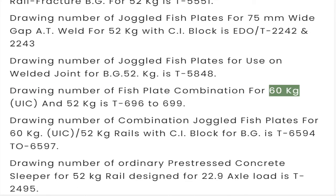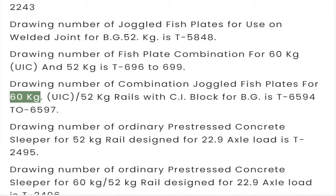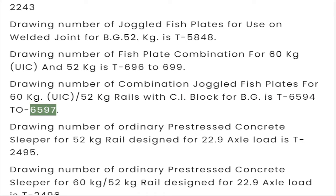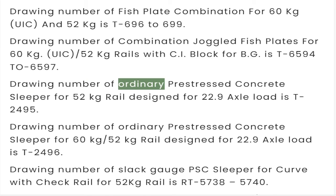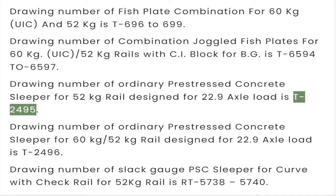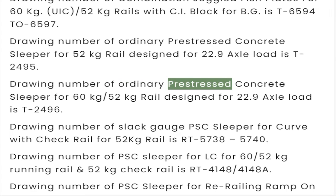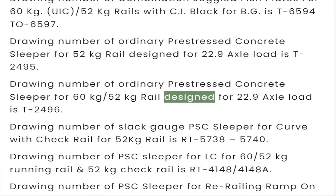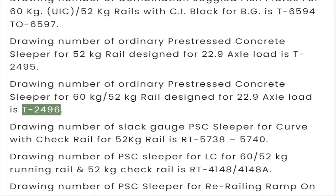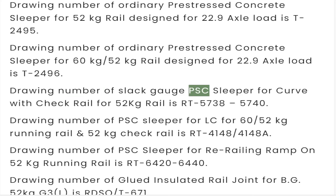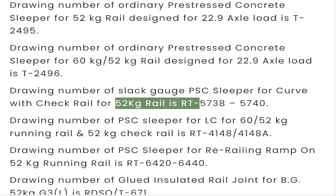Drawing number of fish plate combination for 60 kg UIC and 52 kg is T696 to 699. Drawing number of combination joggled fish plates for 60 kg UIC and 52 kg rails with CI block for BG is T6594 to 6597. Drawing number of ordinary pre-stressed concrete sleeper for 52 kg rail designed for 22.9 tonne axle load is T2495. Drawing number for 60 kg and 52 kg rail designed for 22.9 tonne axle load is T2496.